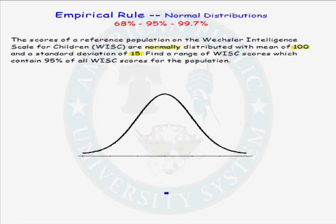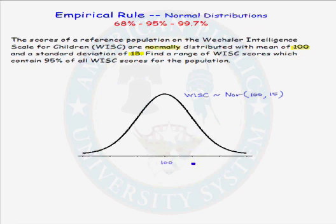Let's first draw the distribution for the WISC scores. We know that the scores are normally distributed with mean 100 and standard deviation 15. The center of the distribution will be at 100. Going out one standard deviation above the mean, we will be at 115. One standard deviation below the mean puts us at 85.